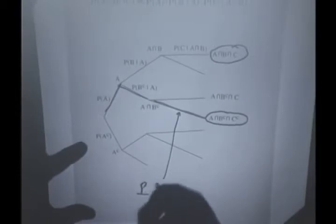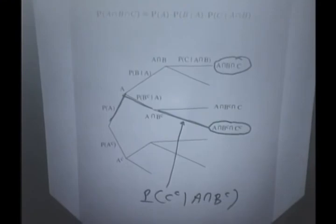In particular, here in this branch, you would have the conditional probability of C complement given A intersection B complement, and so on. So you write down probabilities along all those three branches and just multiply them as you go.